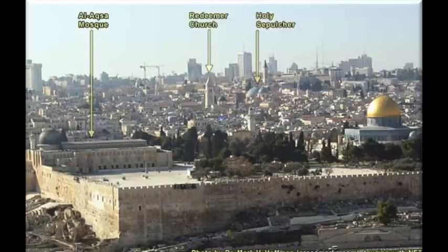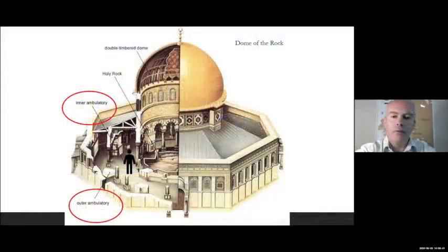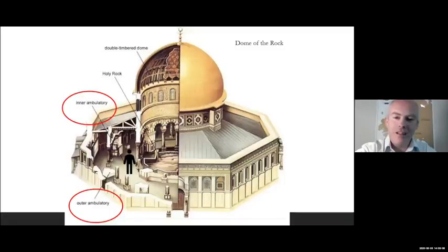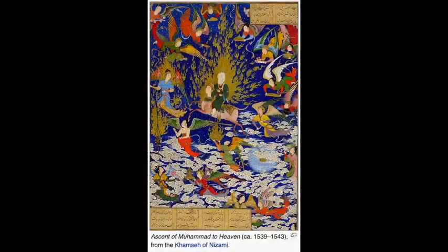When Muslims talk about this building, they do not talk about Jesus Christ. This building was created by Abd al-Malik to commemorate the Miraj - the night journey of Muhammad from this place all the way to heaven to get the five prayers after meeting with Moses. That's why it's the third most holy shrine in Islam - to commemorate the Miraj, which supposedly happened in 621, when he went on the back of a winged horse from Mecca up to Jerusalem and then to the seven heavens. If that is the case, why is there nothing at all written about it in the Dome of the Rock?